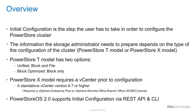If the user is not sure, or believes they may use file services at some time, the recommendation is to select Unified. The PowerStore X model requires a pre-existing vCenter in order to complete the initial configuration — make sure you have the vCenter information on hand. The vCenter should be version 6.7 or higher, and PowerStore X requires either a vSphere Enterprise Plus or vSphere Remote Office Branch Office license.